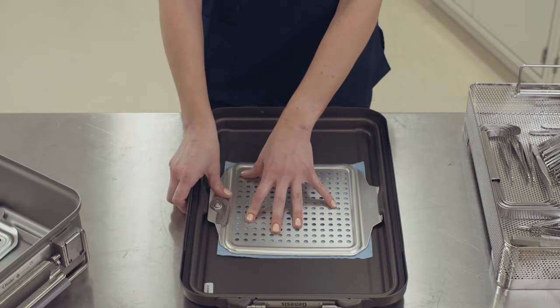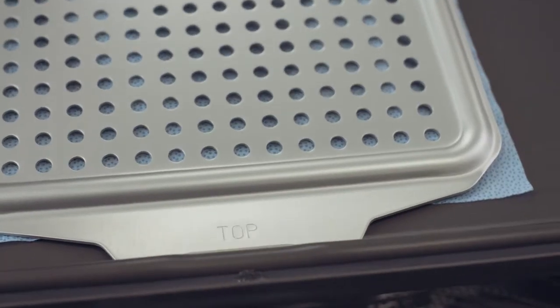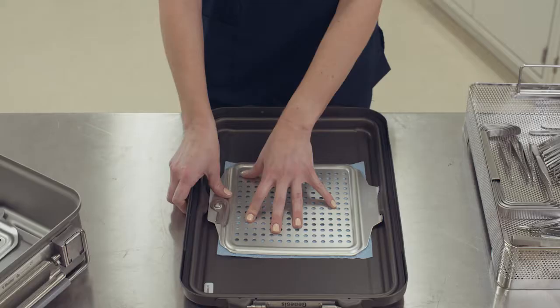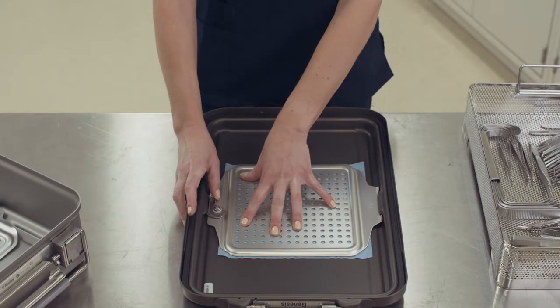Note that the filter retention plates are stamped bottom or top as a guide for appropriate placement. To secure the filter retention plate, apply downward pressure to the plate. Simultaneously rotate the lever toward the side of the container. Make sure the lever is rotated completely and the retention plate is locked firmly in place.